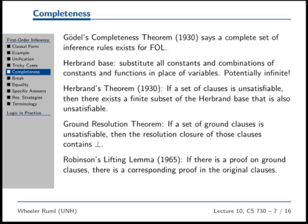So then later on, someone else - I think this was Robinson as well - came up with this ground resolution theorem. If a set of ground clauses is unsatisfiable, then the resolution closure of those clauses contains bottom. So this says that resolution is complete on ground clauses. And then Robinson in '65 said, okay, putting one and two and three together, if there's a proof on the ground clauses, then if I just undo the grounding that Herbrand did and think about it in terms of the variables, then that proof is totally going to work on the lifted version, the original version where we had variables in place of the constants and functions.